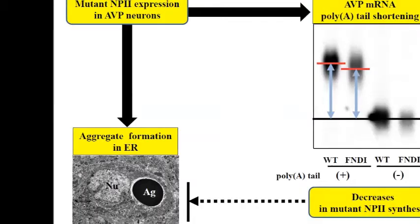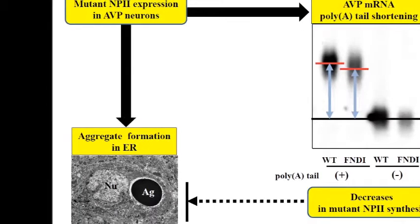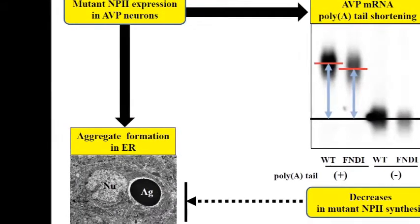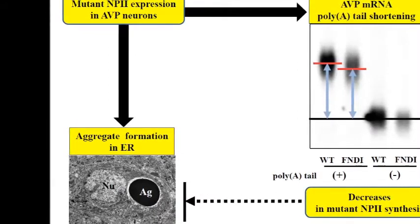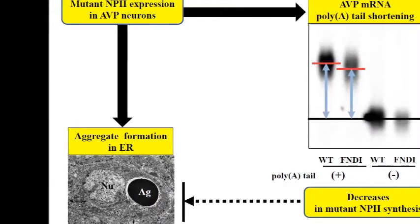The authors established a mouse model of FNDI, in this case mutating the vasopressin carrier neurophysin-2, that is 1698-STOP, one of more than 60 vasopressin gene mutations that cause FNDI in humans, which led to progressive polyuria.